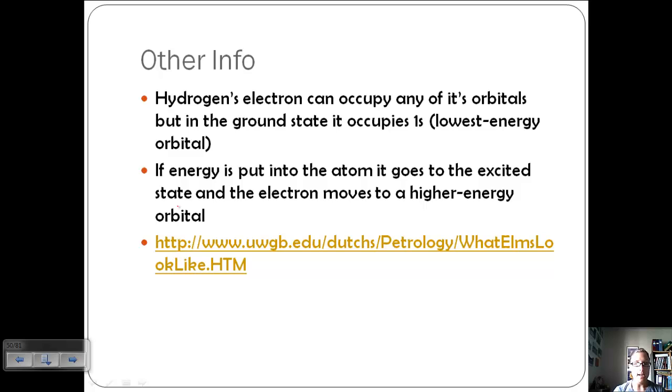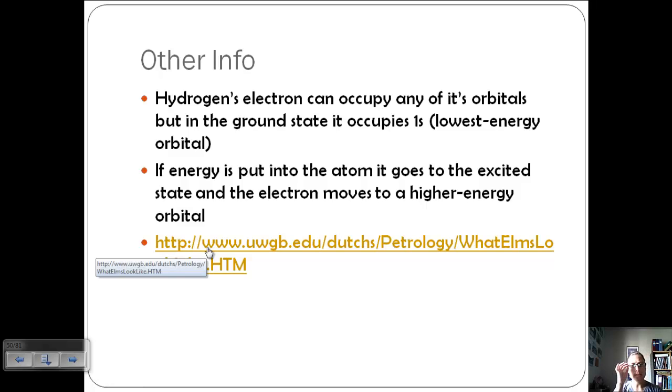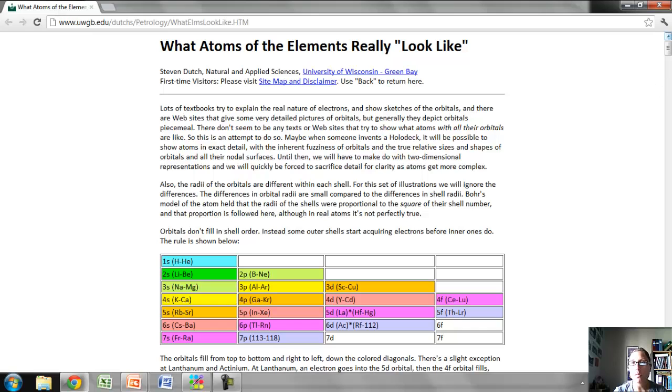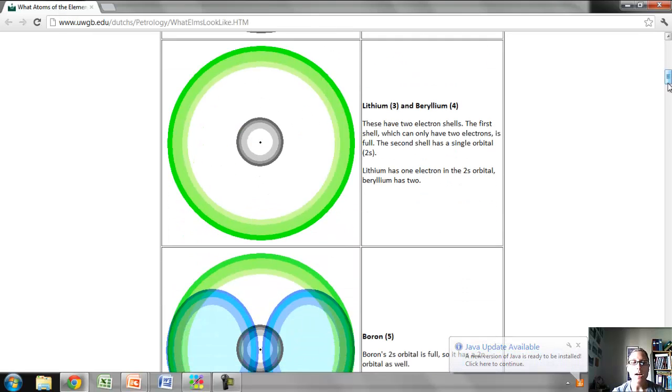Let's take a look at some of the different shapes. What atoms and elements really look like. Here we have hydrogen and helium. They only have one electron shell with a single orbital. Hydrogen has one electron. Helium has two. So here we're in the 1s. Then we're going to lithium and beryllium. These have two electron shells. First we've got 1s, and that's full. And then we're going to 2s. So here's our 1s. And then now we've got a bigger one, which is our 2s.